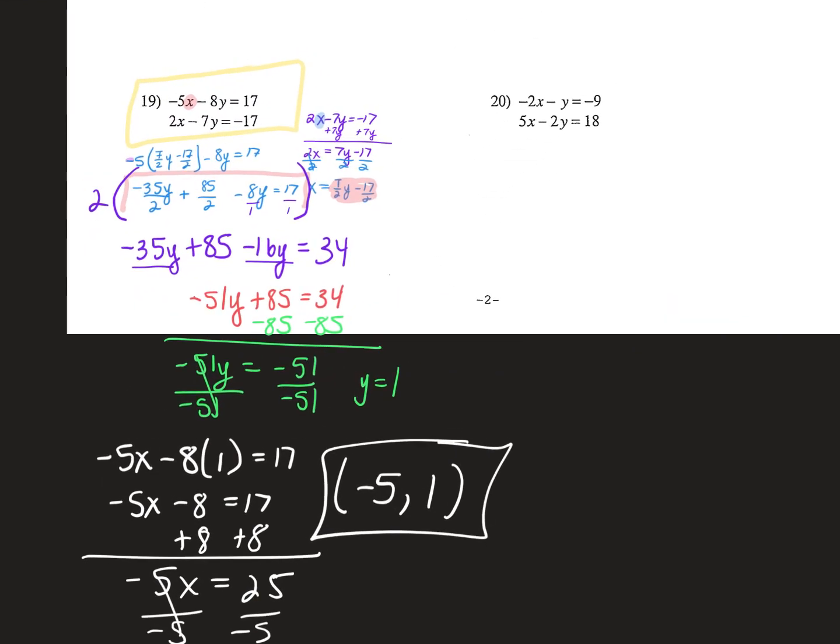Mentally: negative 5 times negative 5 is 25, minus 8 times 1 is 8. 25 minus 8 is 17 — which is what the first equation says. Look at the bottom: 2 times negative 5 is negative 10, minus 7 times 1 is 7. Negative 10 minus 7 gives negative 17. So you know you did the problem correctly. That is the end of our substitution lesson.